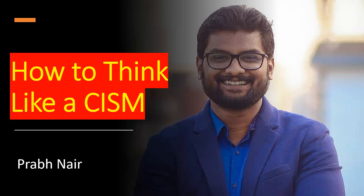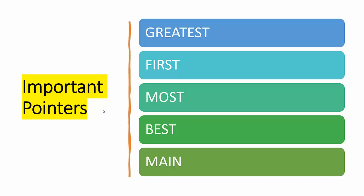Before we start practicing any question, it is very important to understand these pointer words: greatest, first, most, best, and main. These are very important pointers because they actually change the answer. For example, if instead of 'greatest' they use 'first,' the answer changes; if instead of 'first' they use 'most,' the answer changes. In the exam, even in ISACA Q&A, these keywords are mentioned in capital letters.